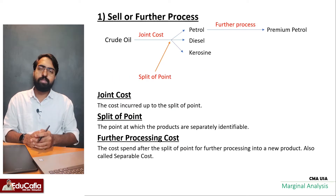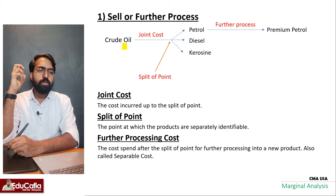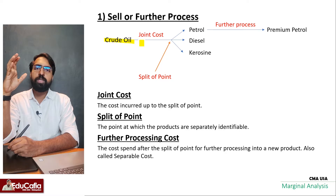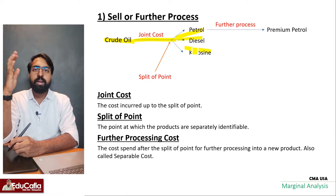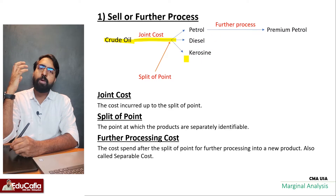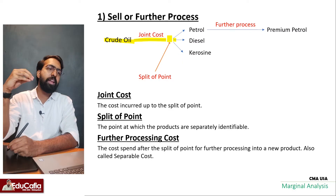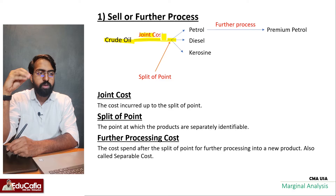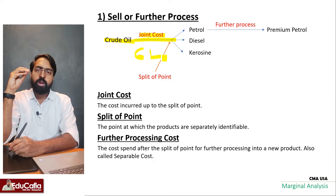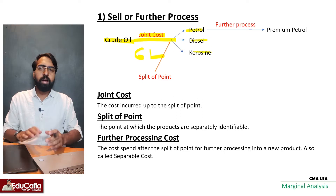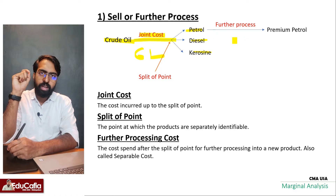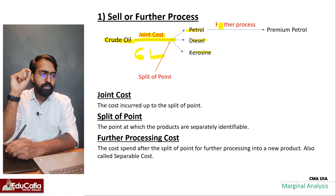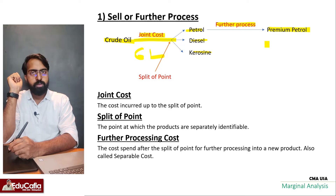Sell or process further: for example, using crude oil, I can produce petrol, diesel, and kerosene — three joint products. After the split-off point, petrol can either be sold as is or processed further into premium petrol. The split-off point is where the joint products become separately identifiable.